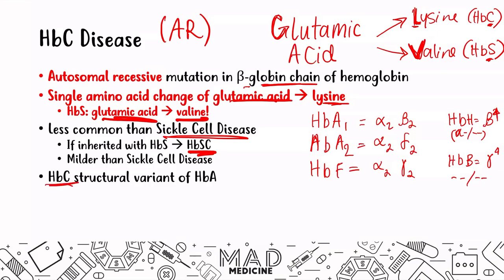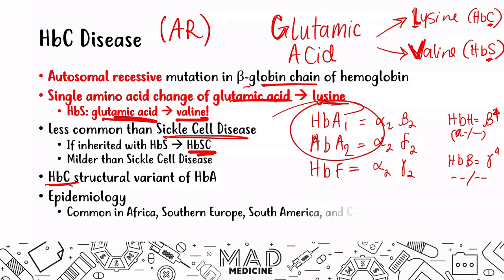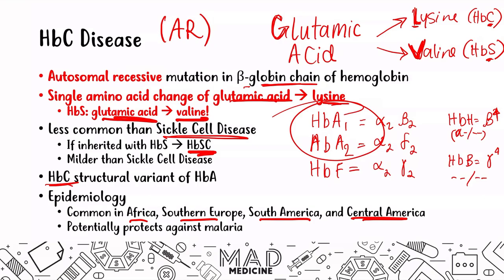Epidemiology-wise, hemoglobin C disease is more common in Africa, Southern Europe, and South and Central America. It's interesting because in all of these countries you have higher incidences of malaria, and therefore we believe this may be potentially protective against malaria. On step one, when it comes to hemoglobin C, most likely it's going to be someone who has immigrated to the United States presenting with the symptoms we're going to discuss.